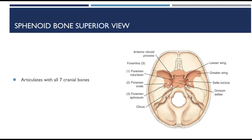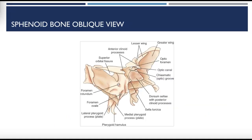You can see all three openings — the foramen rotundum, foramen ovale, and foramen spinosum — in this picture. Between the anterior body and the lesser wings are groove-like canals through which the optic nerve and certain arteries pass into the orbital cavity. These canals begin as the optic groove, which leads to the optic canal and ends at the optic foramen. Supraorbital fissures are slightly lateral and posterior to the optic foramina, providing additional communication with the orbits for various cranial nerves and blood vessels.